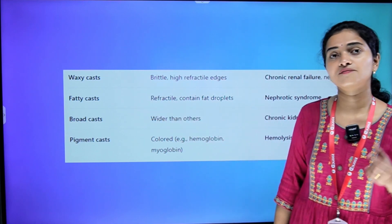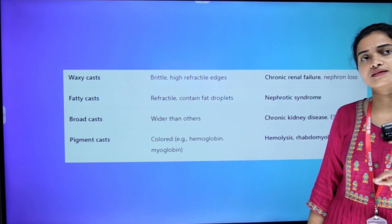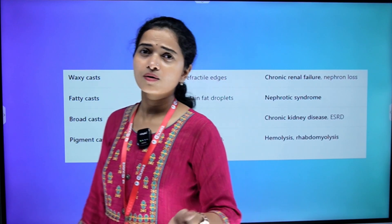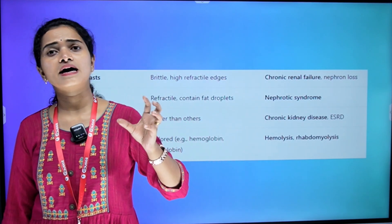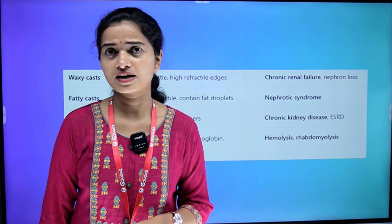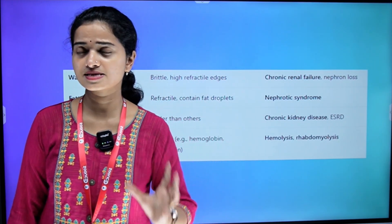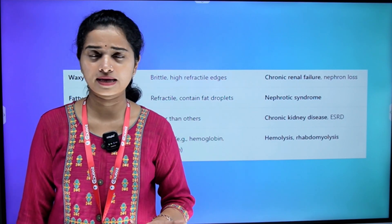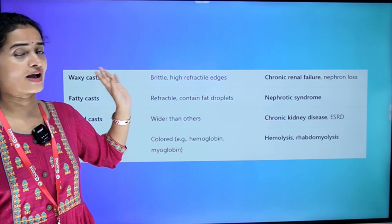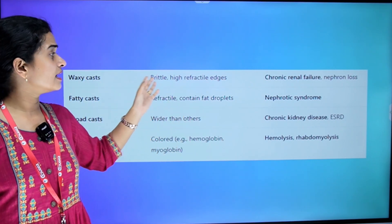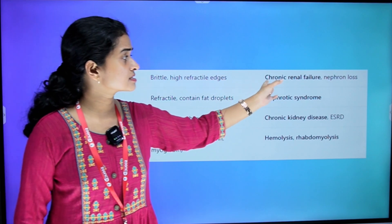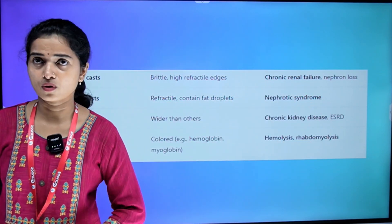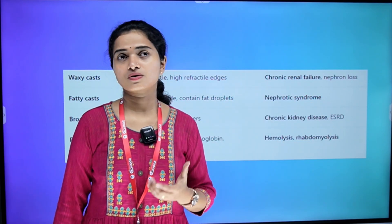Waxy cast — they are brittle. Under disease conditions, waxy casts are seen in chronic renal failure and when we are having nephron loss.